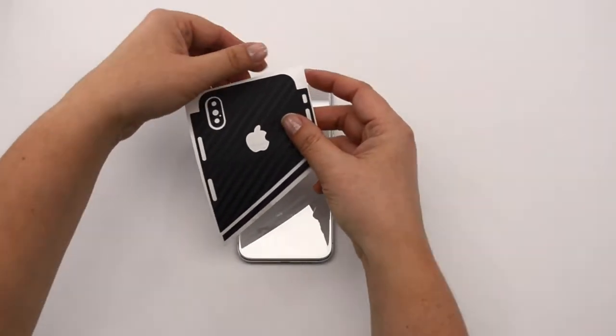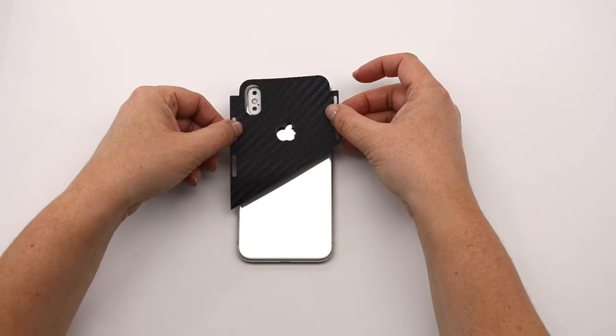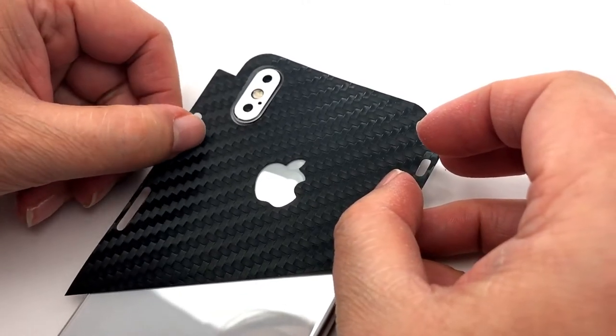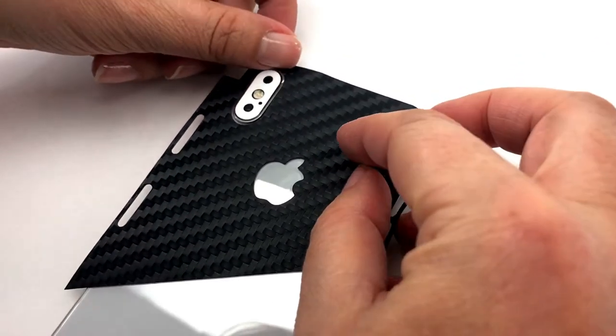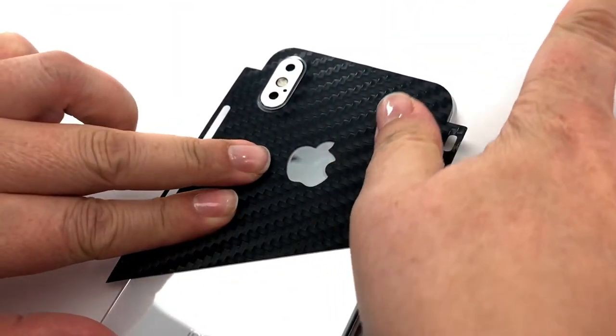Next, we want to install the main top piece, centering around the logo and camera perfectly. These will be your lineup points. After it's lined up perfectly, create a tack point by pressing firmly in the center and smoothing down.